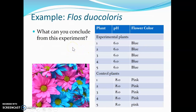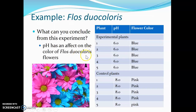So what can we conclude from this experiment? We can pretty soundly say that pH has an effect on Flos duocolorus flowers. pH 6, which is a low pH, gives you blue flowers; pH 8, which is a high pH, gives you pink flowers. Remember that's not where science stops — we've successfully shown that pH had an effect on flower color, but that should lead you to other questions. Are there other plants that are affected this way? Are there other factors that can change the color of the flowers? Any number of those things you would then use to look more into the natural world.